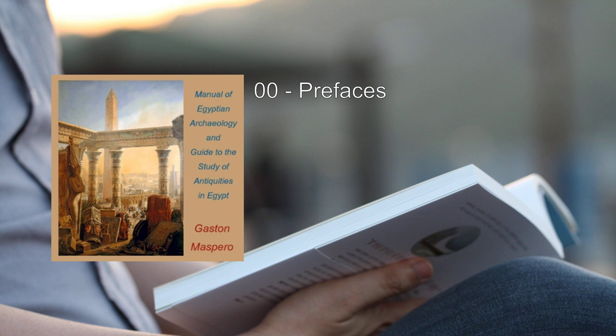Students must always start from the foremost vantage ground. The increasing demand for Egyptian archaeology by English and American tourists, as well as students, decided the English publishers to issue a new edition in as light and portable a form as possible. This edition is carefully corrected, and contains the enlarged letterpress and many fresh illustrations necessary for incorporating adequate accounts of the main archaeological results of recent Egyptian excavations. Monsieur Maspero has himself revised the work.